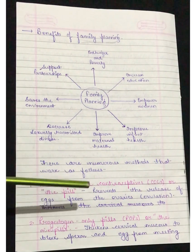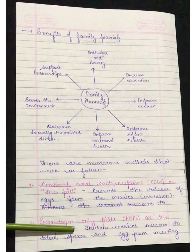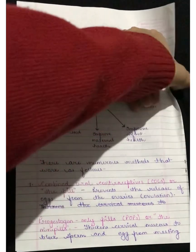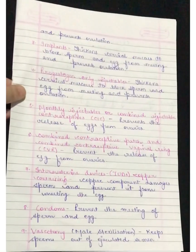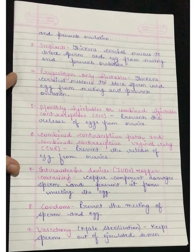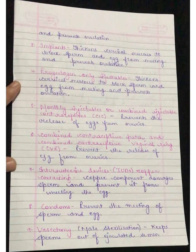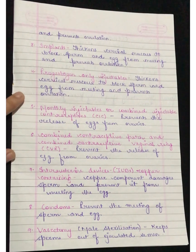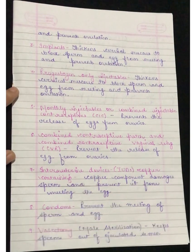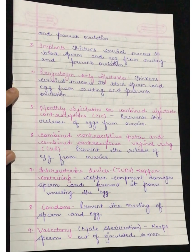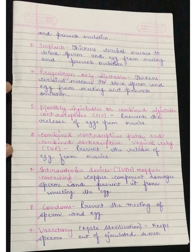The progestogen-only pills also prevent ovulation. Next are the implants, which thicken the cervical mucus to block sperm and egg from meeting and prevent ovulation. Next is the progestogen-only injectables, which thicken the cervical mucus to block sperm and egg from meeting and also prevent ovulation. Next are the monthly injectables, or combined injectable contraceptives, that prevent the release of eggs from the ovaries.